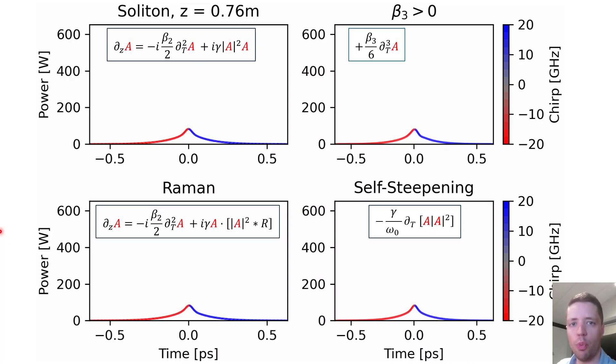Hello and welcome to this video on soliton fission. In previous videos on supercontinuum generation and the Raman effect, we saw that the presence of some kind of disturbance can cause otherwise stable solitons to split into multiple distinct pulses. That's the process known as soliton fission, and today we're going to take a look at how the presence of beta-3 or Raman self-steepening can give rise to this effect.